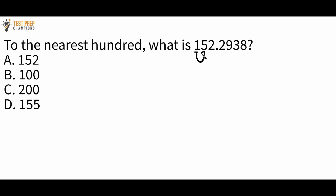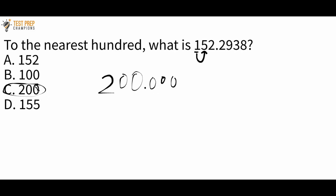Look at the number directly to the right of the 1 and ask: is it less than 5 or 5 or greater? In this case it's a 5, so we round up. Come back to this 1, bump it up 1 to make it a 2, and replace the digits to the right with zeros. We can just stop at 200 — no need to write a decimal and keep adding zeros. So C, 200, is the correct answer.